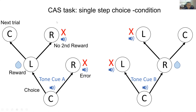This is the task structure in the single-step choice condition. The task is basically the same, except that there is only one choice step — it is essentially a simple condition. Please keep in mind that if the animal makes a sequential choice like first going left and then right, an error feedback is delivered instead of a second reward. In this condition, animals should go left and then directly return to the center port, and the next trial will start.